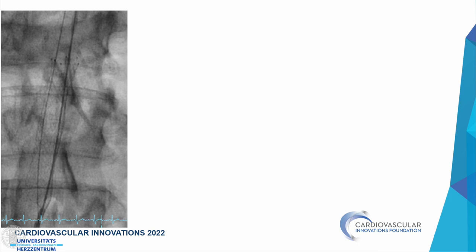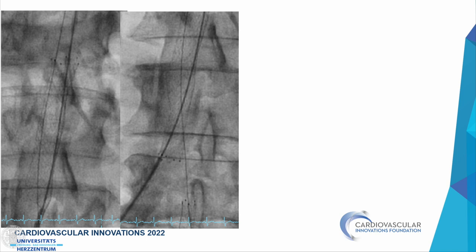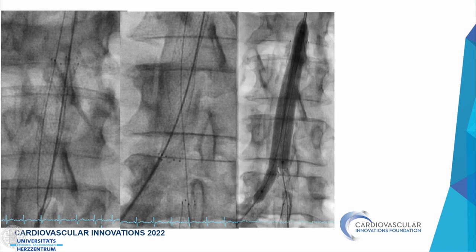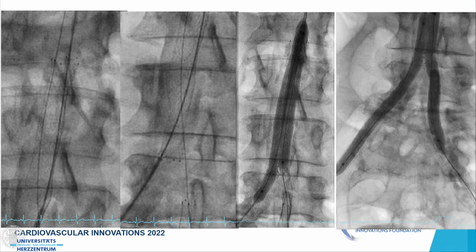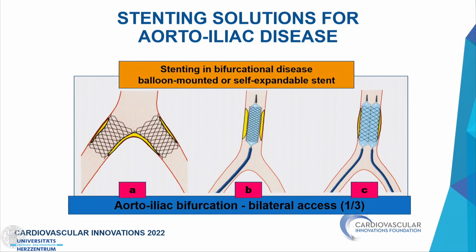The stent is extended to the level of the aortic bifurcation, importantly not extending into either common iliac artery — it just ends at the carina. The next step extends stenting into the left common iliac artery toward the iliac bifurcation, with bare metal nitinol stents also placed in the right common iliac artery — a kissing stent implantation at the common iliac artery origins plus one or two stents in the infrarenal aorta.